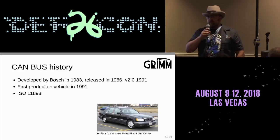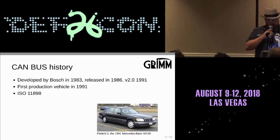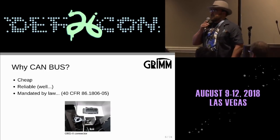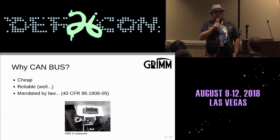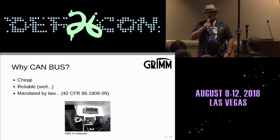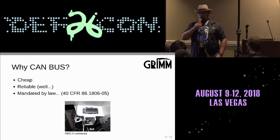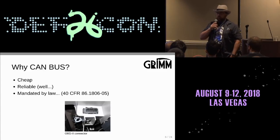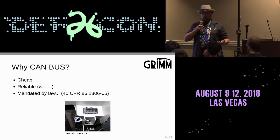ISO 11898 is the set of ISO specs that define CAN bus for automotive. So why do car manufacturers love CAN bus so much? A lot of it is cost — it's really cheap. Nearly any microcontroller you buy will have a CAN peripheral built into it. It's also reliable. It's designed from the ground up to be extremely reliable to environmental noise, and it's used in building automation and industrial applications where there's a lot of electromechanical noise.